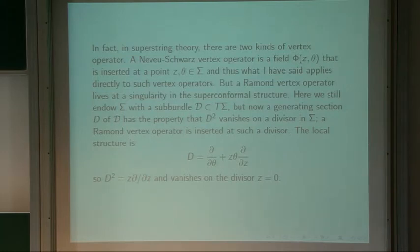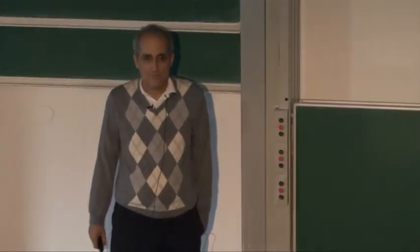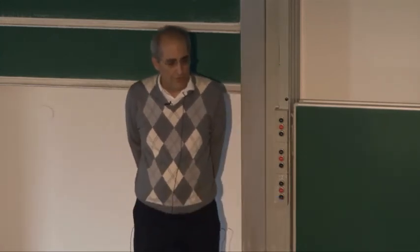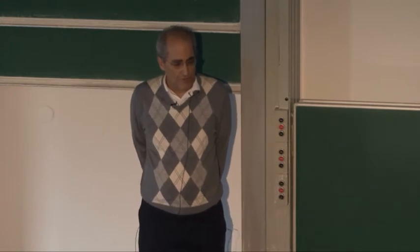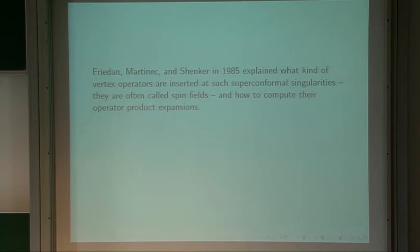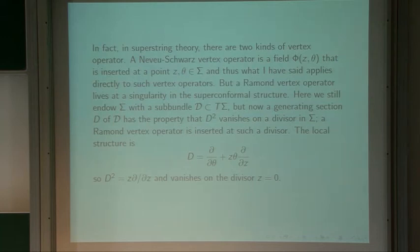The local structure near what I call a Ramond puncture is that a generating section looks like the standard one but with a factor of z: D = d/d-theta + z*theta * d/dz. Now D-squared is z * d/dz, so it vanishes on the divisor where z is zero. In 1985, Friedan, Martinec, and Shenker explained what kind of vertex operators are inserted at such singularities — they're often called spin fields — and explained how to calculate their operator product expansion.